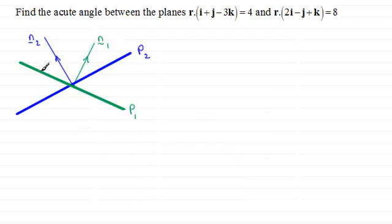Now let's suppose that our two planes are P1 and P2 and the normals to those two planes are N1 and N2 respectively. So if you're trying to find out the angle between the two planes, let's say it's this angle in here, angle theta.